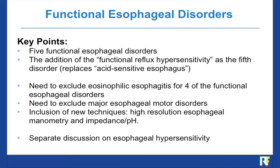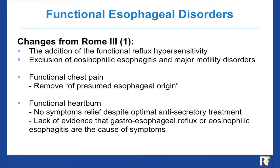There is a separate discussion on esophageal hypersensitivity, though in the final layout of the chapter this will likely move earlier. Changes from Rome 3 include the addition of functional reflux hypersensitivity, the exclusion of eosinophilic esophagitis and major motility disorders. Functional chest pain was previously termed 'of presumed esophageal origin,' but this is not used in the literature and the current proposal is to shorten it to simply functional chest pain.